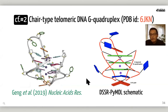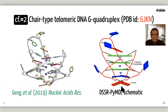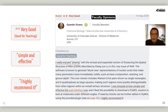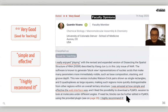Here is another example of a chair-type telomeric DNA G-quadruplex. On the left is taken directly from a publication; on the right is the DSSR-generated schematic. You can see the three-layer G-quadruplex and, by color coding, the A-A mismatch pair with a propeller — a large propeller associated with this base pair. The block-wheel schematics are highly acclaimed. On the Faculty Opinions website, DSSR has been rated as very good, classified as good for teaching, and the web interface recognized as very simple and effective and highly recommended.